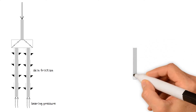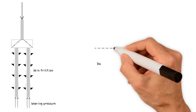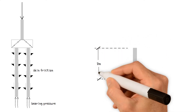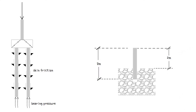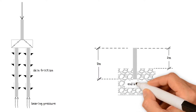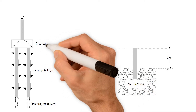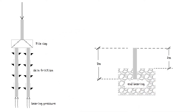A short pile of 3 meters can be used to support a foundation in rock that is 2 meters below the surface. In this case the capacity is predominantly end bearing. A pile cap is essentially a reinforced concrete deep beam that transfers and distributes column load into piles.